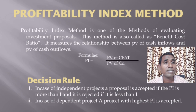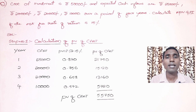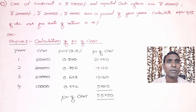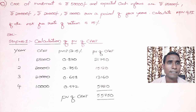Now let us quickly go through a problem. The problem is similar to NPV. The cost of investment is rupees 50,000. Expected cash inflows are rupees 25,000; 20,000; 20,000; and 10,000. This is a project with a four-year life period with an investment of 50,000 rupees. Calculate NPV and PI if the risk-free rate of return is 15%.